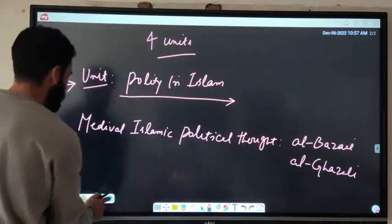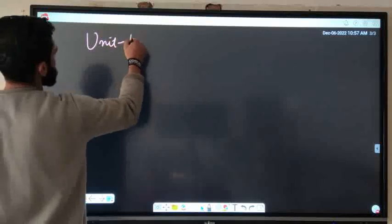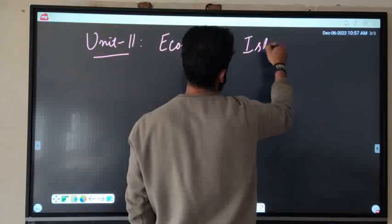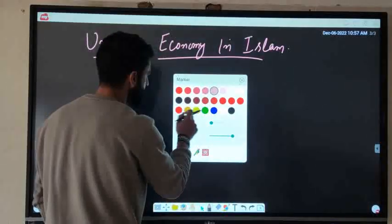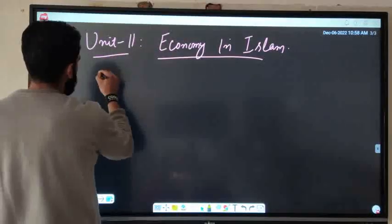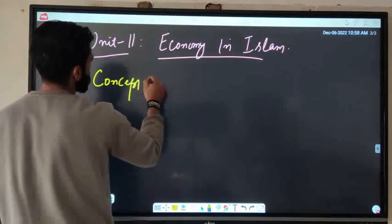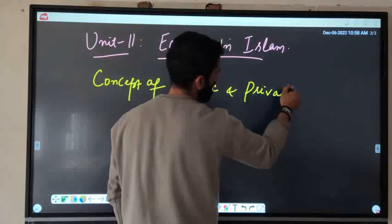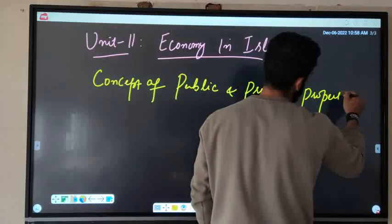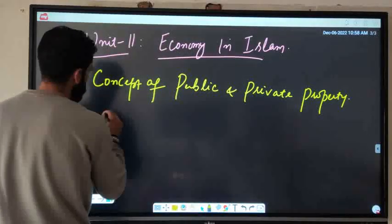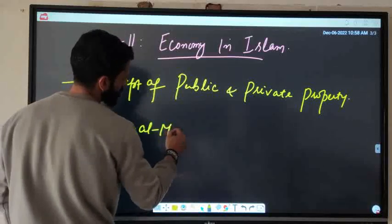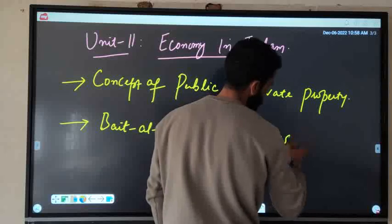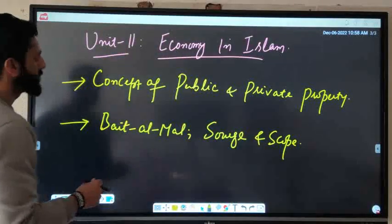Coming to unit second, that is Economy in Islam. The important topic from this is concept of public and private property. Second important is Bait al-Mal, source and scope. These are the two important topics in this unit.